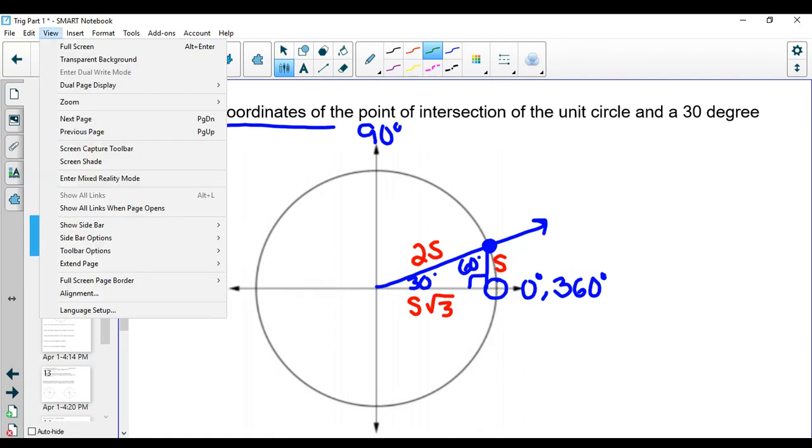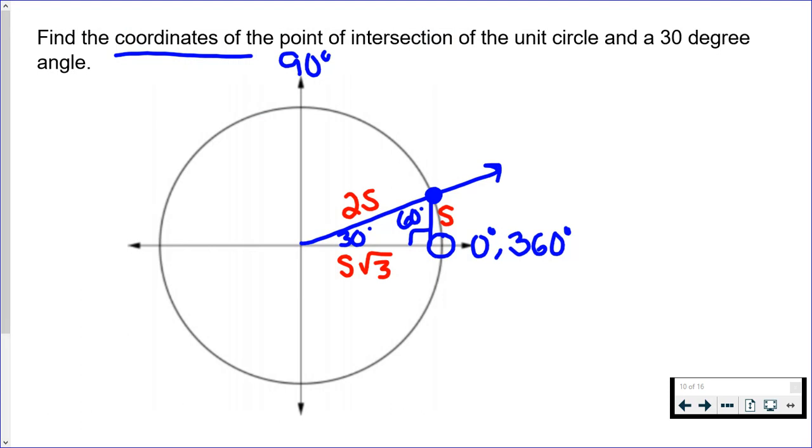Now if you remember one thing about the unit circle, well a couple things about the unit circle, we know that the center is here at zero zero. And if I go from the center to any point on the outside of the circle, it's called my radius, and the radius of the unit circle is one.